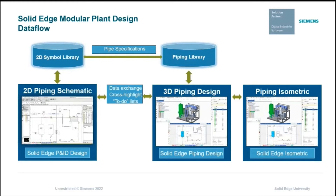The libraries are shown linked to the applications, tied together in the same database for automation and easy access to any information when needed — no need to re-enter any data. Pipe specification is a common link between P&ID and Piping Design. The P&ID application provides the ability to filter valid component selection based upon pipe sizes. When piping reads the schematic data, it automatically adds all the fittings and then creates the piping assemblies.